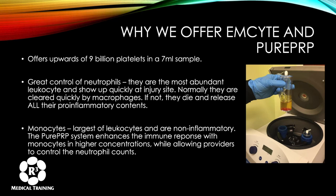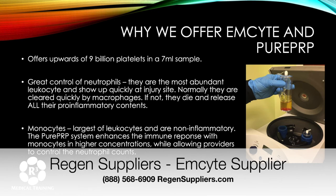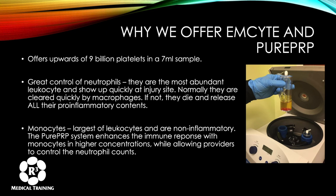The M-Site system offers upwards of nine billion platelets in a seven-milliliter sample with really good control of neutrophils. Neutrophils are the most abundant leukocyte and arrive quickly at injury sites; normally they are cleared by macrophages, but if not, they die and release pro-inflammatory contents. Very high neutrophil counts from a single spin can create a bigger problem in the first week or two, whereas the second spin keeps the monocytes but removes many of the neutrophils.